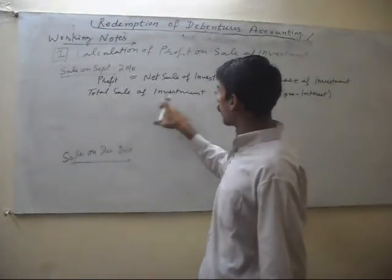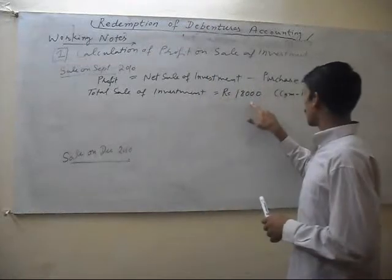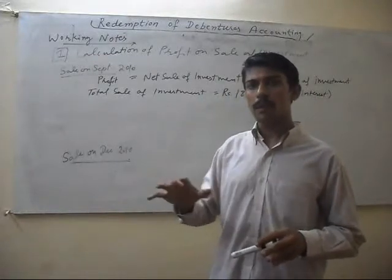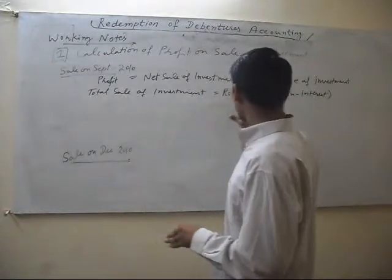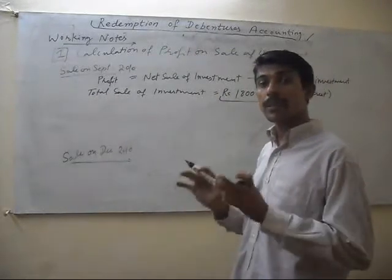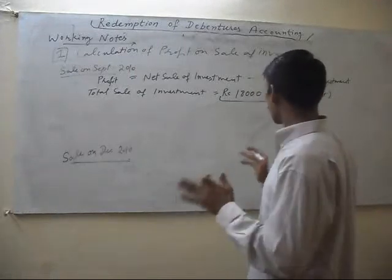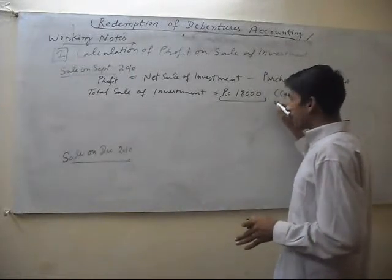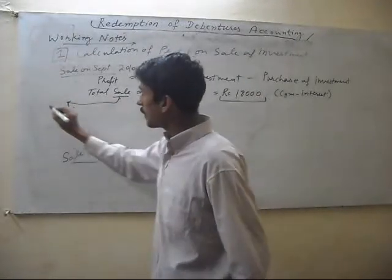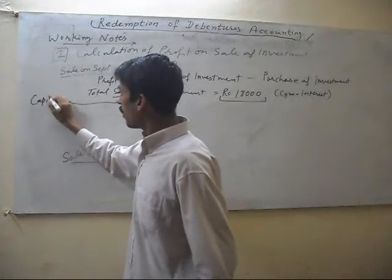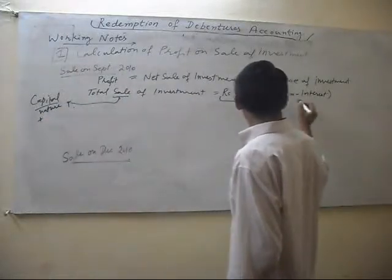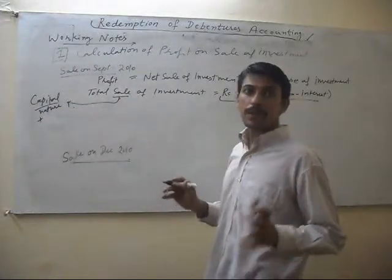What is given in the question: total sale of investment is 18,000 cum interest. Cum interest means it is an agreement between two parties that in the given price, the interest will be included. But we know that the sale amount of investment is a capital nature item, while interest is a revenue nature item.